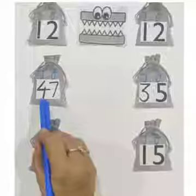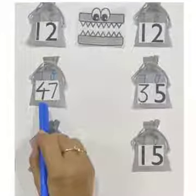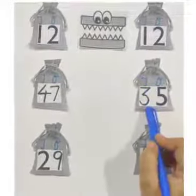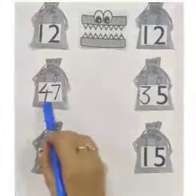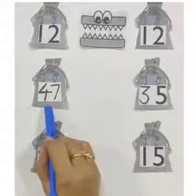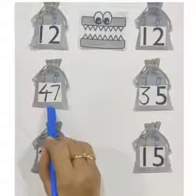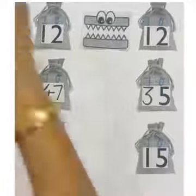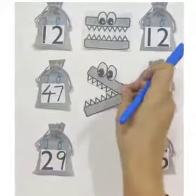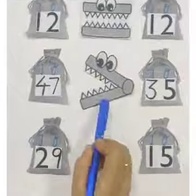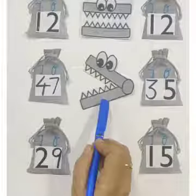Here the number at the 10's place is 4, and here the number at the 10's place is 3. So 4 is greater than 3, and our alligator will eat 47 apples — like this. That means 47 is greater than 35.